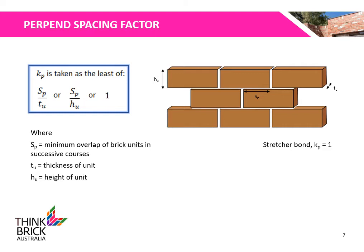The perpen spacing factor, Kp, shall be considered for horizontal bending. It shall be taken as the minimum of the following values, where Sp is the minimum overlap of brick units in successive courses, Tu is the thickness of the unit, and Hu is the height of the unit. For stretcher-bonded walls, Kp is taken as 1. For horizontal bending analysis of stack-bonded brick walls, you can check out the stack bonding presentation on our channel.